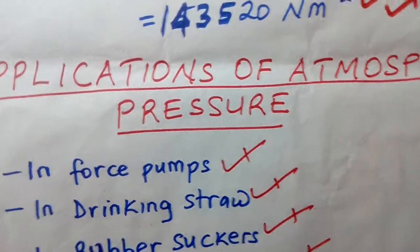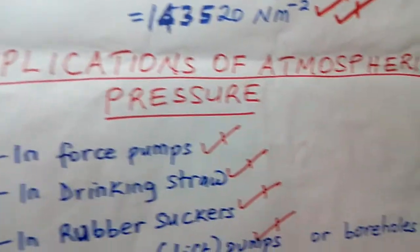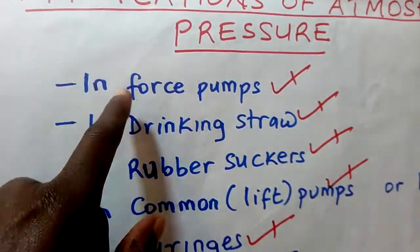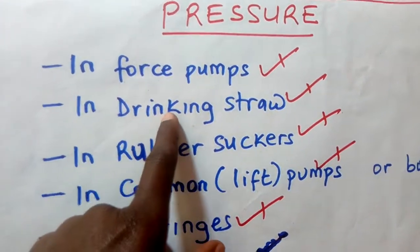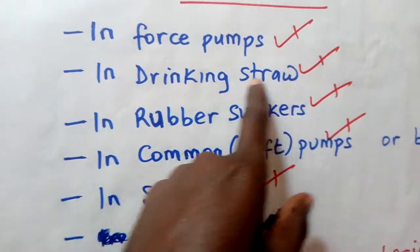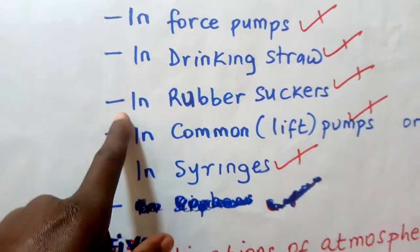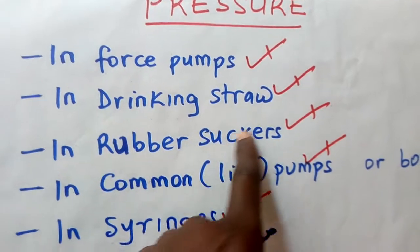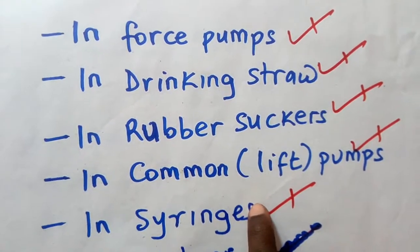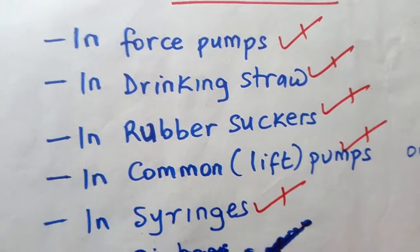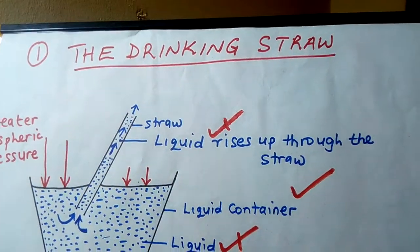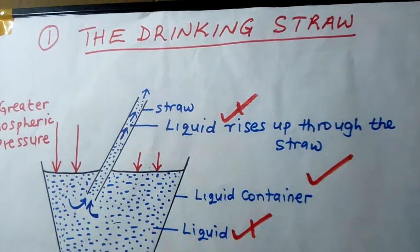Now let's look at applications of atmospheric pressure. Atmospheric pressure is used in force pumps, in drinking straws when sucking a liquid, in rubber suckers, and in syringes which doctors use for injections. Let's look at the first application: the drinking straw — how a liquid is able to reach your mouth when drinking soda or beer.